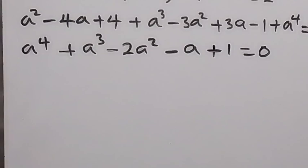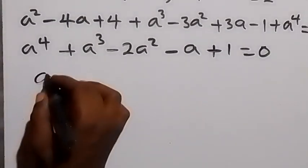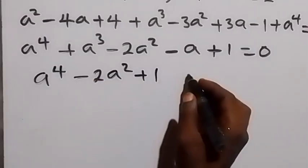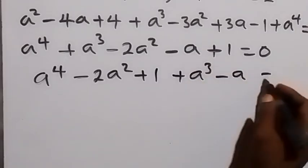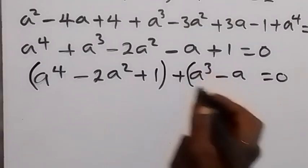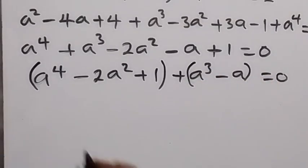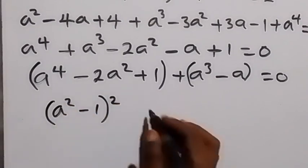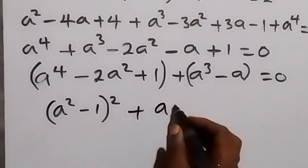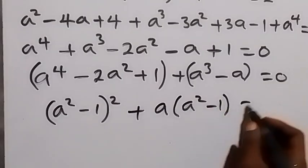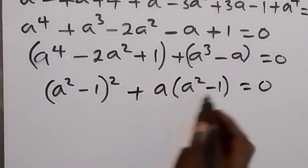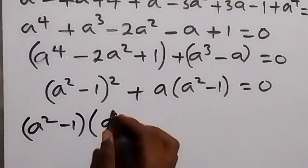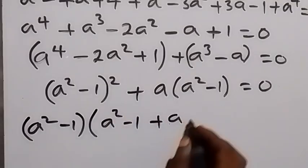Let's rearrange and group: bring (a to the power 4 minus 2a squared plus 1) together, and (a cubed minus a) together, equals 0. The first group factors as (a squared minus 1) squared, and the second group factors as a times (a squared minus 1), equals 0. Since (a squared minus 1) is common, we factor it out: (a squared minus 1)(a squared minus 1 plus a) equals 0.